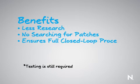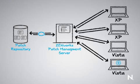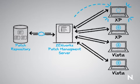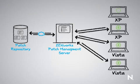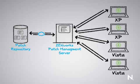It gives you a full closed-loop process, once applied, to ensure that your devices got the patch and that the devices stay patched. If a device is no longer patched, it will report that. Additionally, there's something called mandatory baselines, where you can actually say this patch must stay on every machine in a certain group, and if it disappears, the device will be automatically repatched on the next refresh.